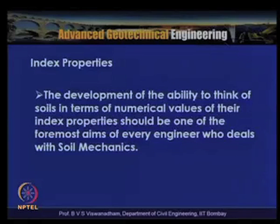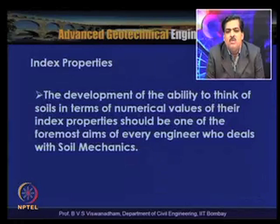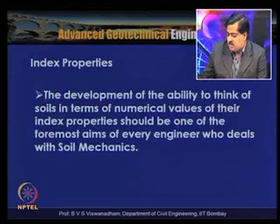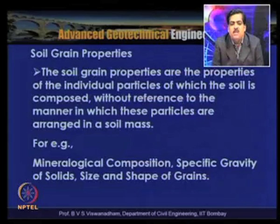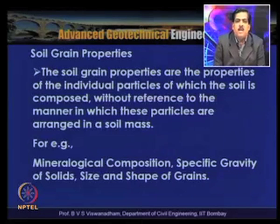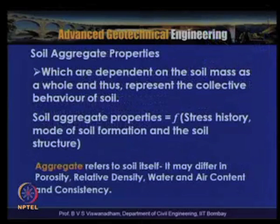Having numerical values of index properties should be a foremost aim for every engineer who deals with soil mechanics. Soil grain properties are the properties of individual particles without reference to the manner in which particles are arranged in a soil mass — examples include mineralogical composition, specific gravity of solids, and size and shape of grains. Soil aggregate properties are dependent on the soil mass as a whole and represent collective behavior — they are functions of stress history, mode of soil formation, and soil structure.